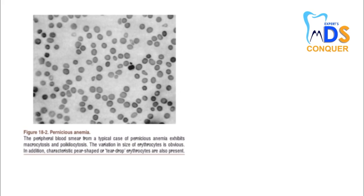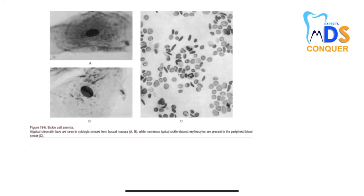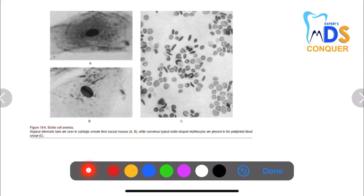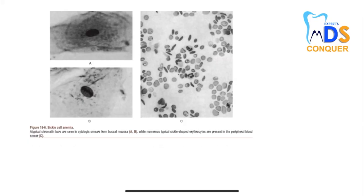Next, if you see sickle-shaped erythrocytes, that is quite obvious — sickle cell anemia. Sickle-shaped erythrocytes are seen with sickle cell anemia.